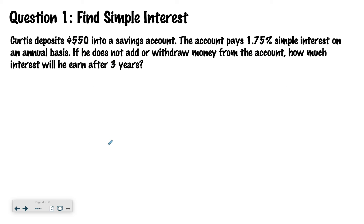Now I want you to solve this one on your own. Curtis deposits $550 into a savings account. The account pays 1.75 simple interest on an annual basis. So fun fact, annual means once per year. If he does not add or withdraw money from the account, how much interest will he earn after three years? So go ahead, set up your equation. I always want to see your initial setup and then your final answer. Go ahead and do that. Good luck.